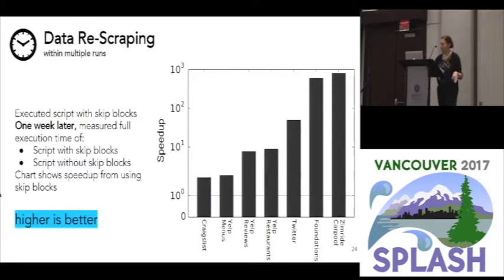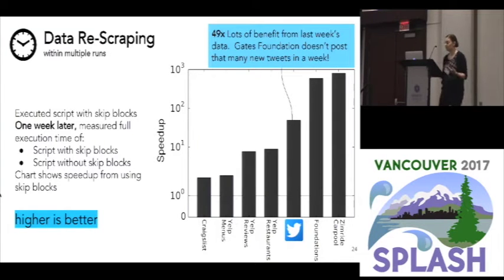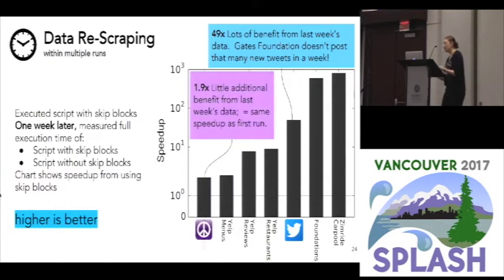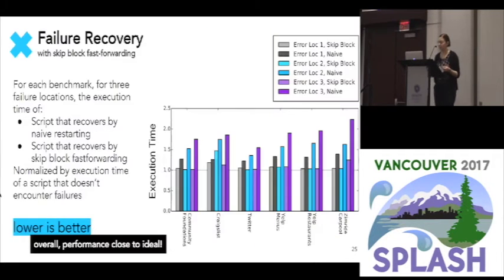In the Craigslist example, because there's high data turnover and because we're able to skip one page load per ad skipped, we're actually saving a lot of time — that advances our situation significantly. Moving on to data rescraping: when we want to go back and refresh one week later, the situation has actually reversed. Twitter is now one of the stars with a 49x speedup, because between last week and this week the Gates Foundation probably didn't post that many new tweets, so we get a lot of benefit from last week's scrape. In the Craigslist case, there is so much data turnover — basically all listings are new one week later — so we're not getting much extra benefit from last week's data and we see about the same speedup as before.